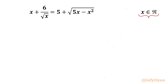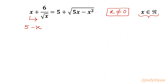Let us get started by writing x cannot be equal to 0, as it is in the denominator. Now I will take minus x to the right-hand side, so I can write (5 − x) on the LHS plus √(5x − x²), and the RHS becomes 6 over √x.